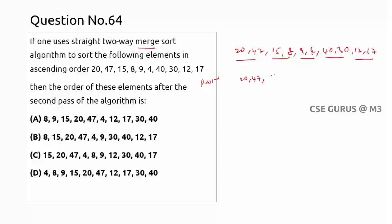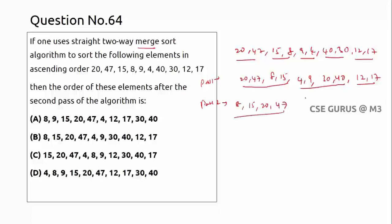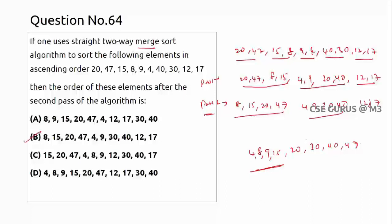Pass one results: 20, 47 stays as is; 15, 8 becomes 8, 15; 9, 4 becomes 4, 9; 40, 30 becomes 30, 40; 12, 17 stays as is. Pass two merges groups of four: first four gives 8, 15, 20, 47; next four gives 4, 9, 30, 40; then 12, 17 remains. So the answer after pass two is 8 15 20 47 | 4 9 30 40 | 12 17 — option B is correct.